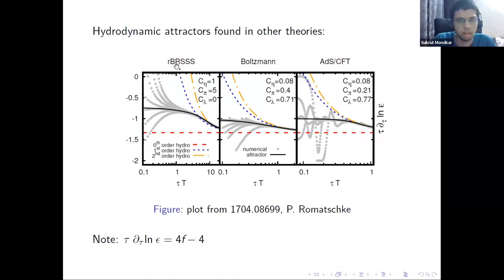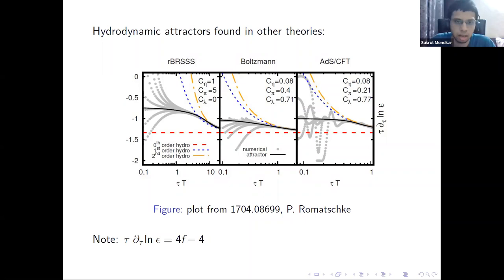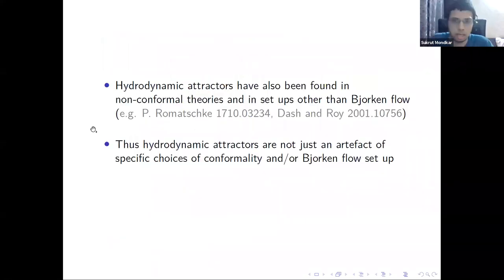This slide shows three attractors in different theories. RBRS is an extended version of MIS; the middle one is kinetic theory; and the right one is the N=4 calculation using AdS/CFT — the complete microscopic theory calculation. The gray lines in each plot are the different initial conditions and the black solid line is the hydrodynamic attractor. All initial conditions eventually converge to the hydrodynamic attractor. Hydrodynamic attractors have also been found in non-conformal theories and in setups other than Bjorken flow.